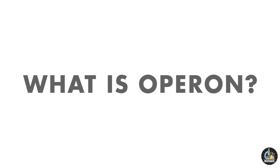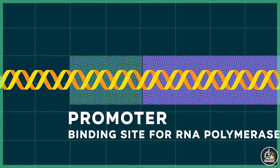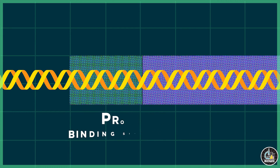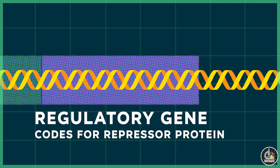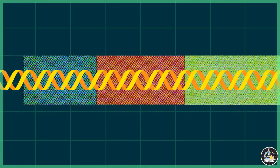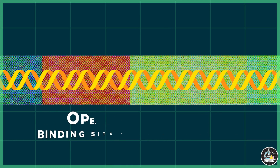So what is an operon? An operon consists of four components. First, the promoter, which serves as the binding site for the enzyme RNA polymerase to start the transcription process. Second, a regulatory gene, which codes for a gene regulatory protein called the repressor protein. Third, the operator, which lies adjacent to or overlaps with the promoter and serves as the binding site for the repressor protein.